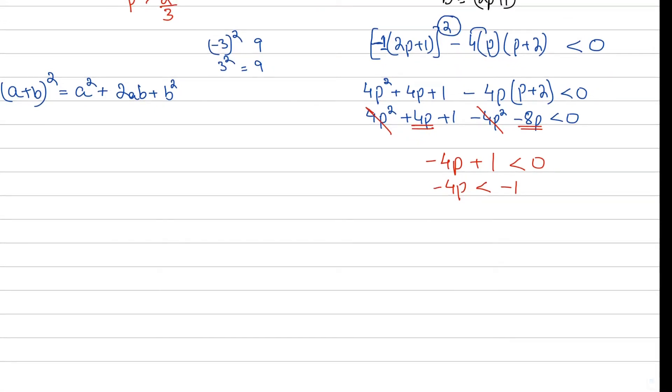Now 4p squared cancels out on both sides. You have to remove the negative sign. In that case, we multiply both sides with negative. Basically in the background we multiply by minus 1 and minus 1. Whenever you do this with an inequality, the inequality sign flips. So this becomes 4p and 1, and the inequality sign flips. So 4p is greater than 1, and p is greater than 1 upon 4.